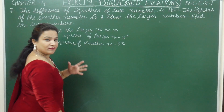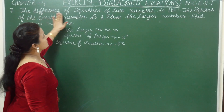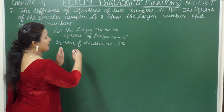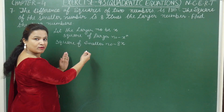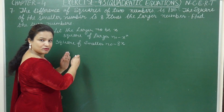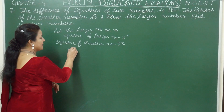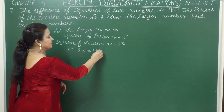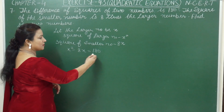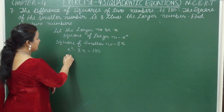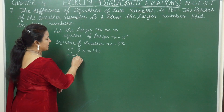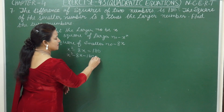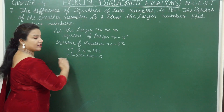We are also given that the difference of squares of the two numbers is 180. The difference between the square of the larger number and the square of the smaller number equals 180. So we get x squared minus 8x minus 180 equals 0. This is our quadratic equation.